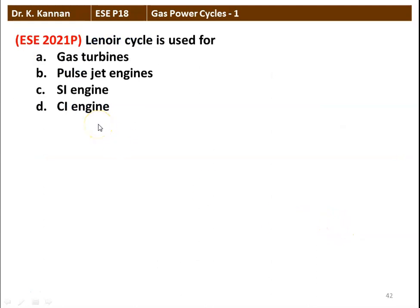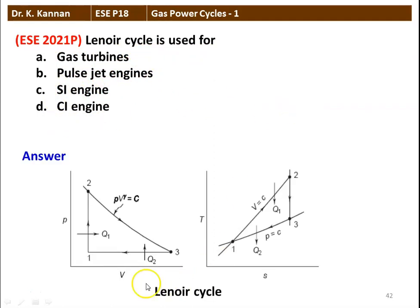Next question: the Lenoir cycle is used for which engine? Options are gas turbine, pulse jet engine, SI engine, and CI engine. The Lenoir cycle has three processes: 1 to 2 is constant volume heat addition; 2 to 3 is adiabatic expansion; and 3 to 1 is constant pressure heat rejection. This cycle is used for the pulse jet engine.